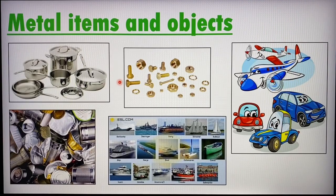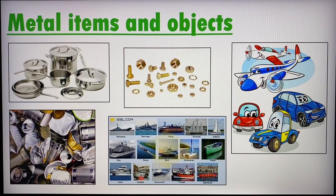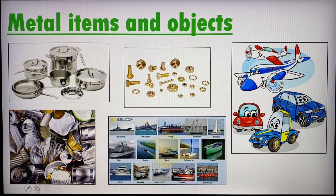Now, moving on to metals. These are some items or objects made of metals: pots and pans, cans used to store food or canned drinks, nuts and bolts and screws, ships and boats, and vehicles like cars and airplanes which definitely use a lot of metal to function properly and keep us safe.